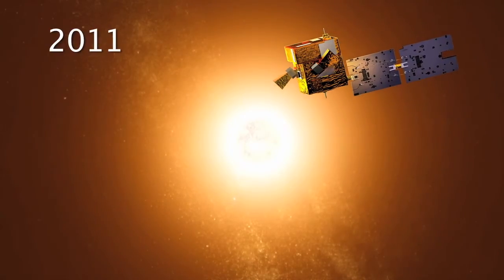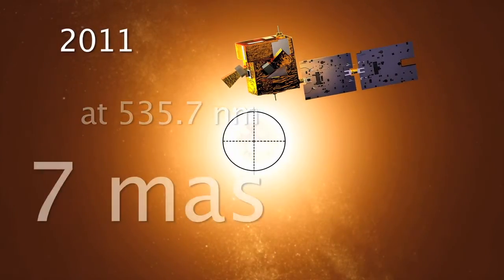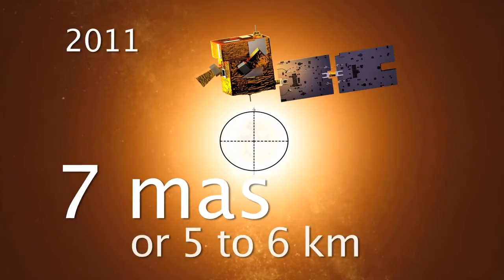From the measures taken in 2011, the Picard team found the solar oblateness close to 7 milliarcseconds, thus also around 5 to 6 km.